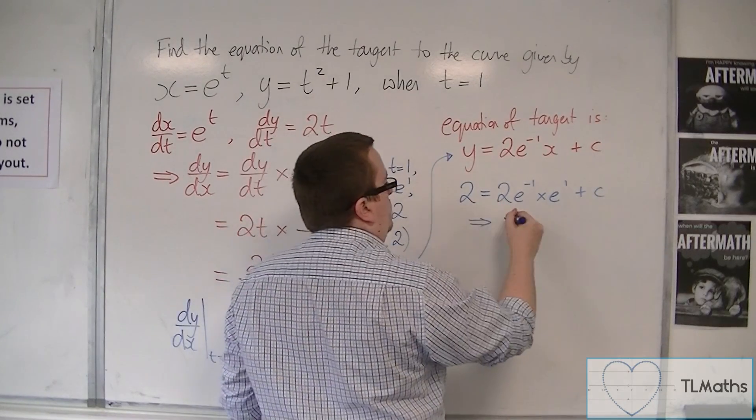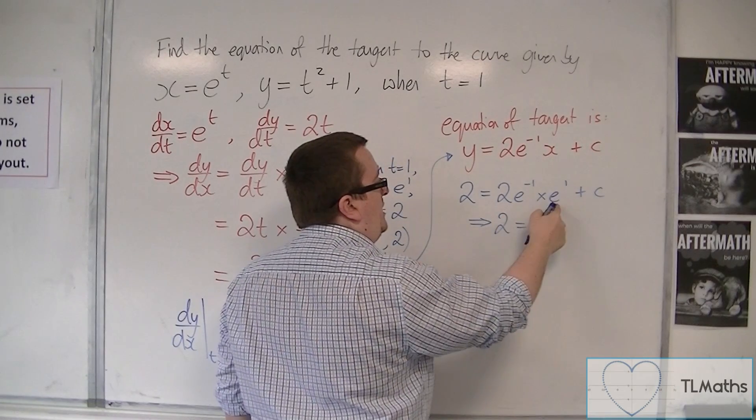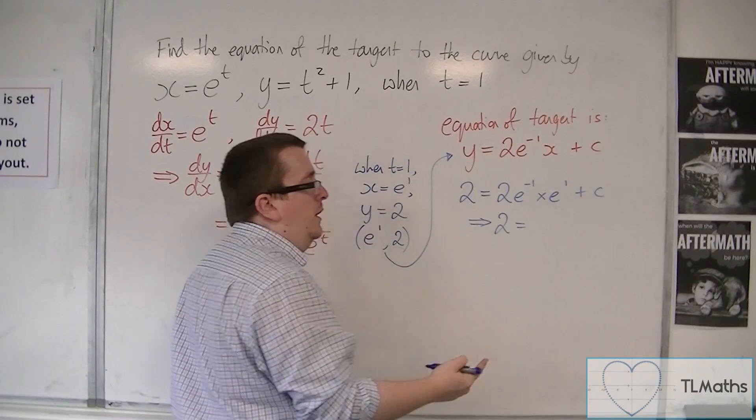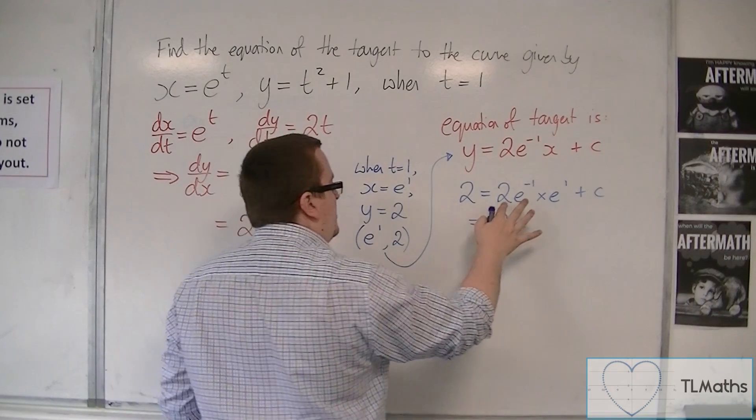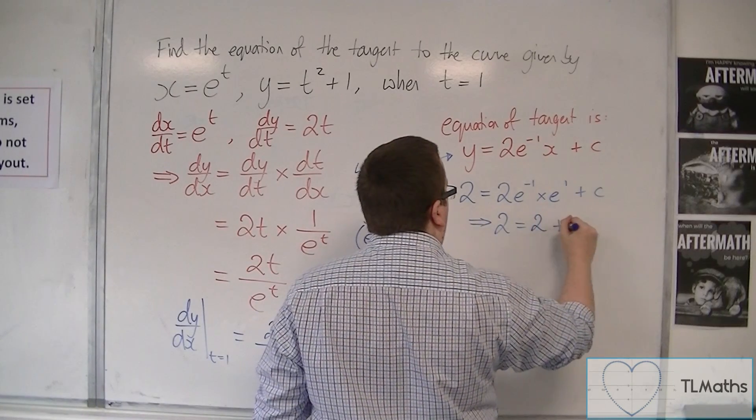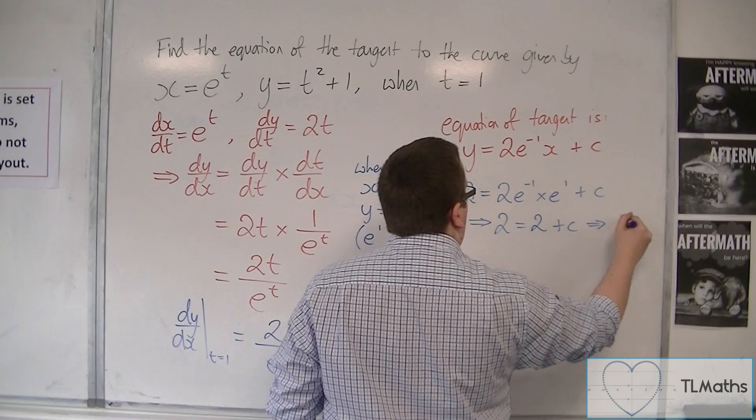So 2 is equal to, well, e to the minus 1 times e to the 1 is just e to the 0, which is 1. So we just get 2 times 1, plus c, and so c must be 0.